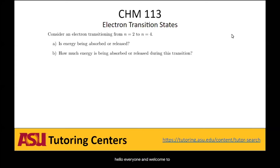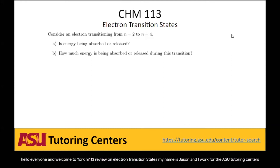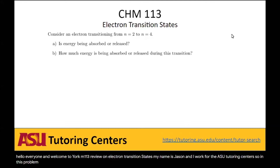Hello everyone and welcome to your Chem 113 review on electron transition states. My name is Jason and I work at the ASU tutoring centers. So in this problem, our electron is transitioning from n equals 2 to n equals 4. What does that mean?